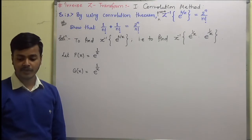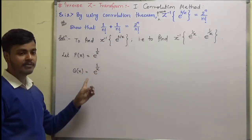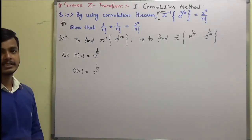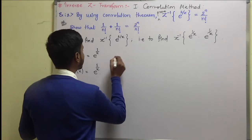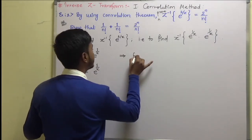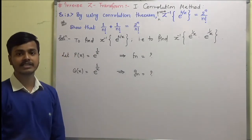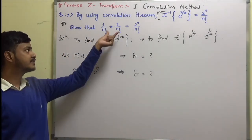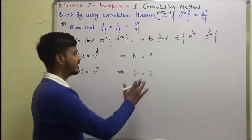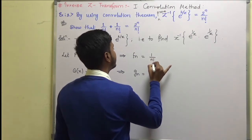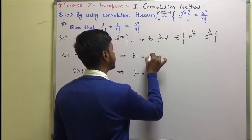Let f(z) = e^(1/z) and g(z) = e^(1/z). Now, try to get f(n) and g(n). Without finding them, can anyone tell me what would be f(n) and g(n)? We know that the z-inverse of e^(1/z) is 1/n!. You should remember this because we have taken problems on this when learning the z-transform.